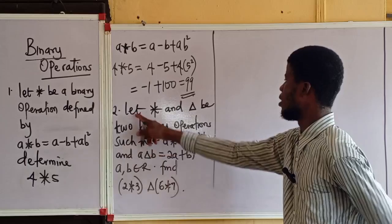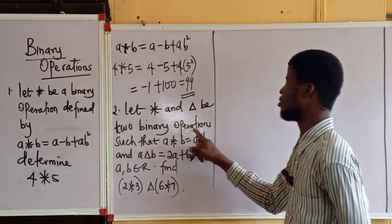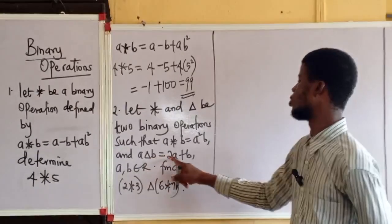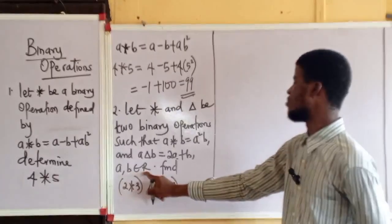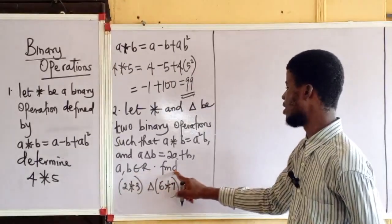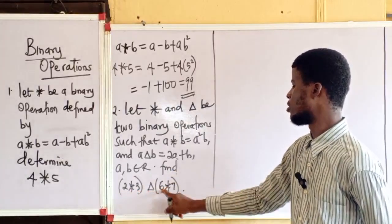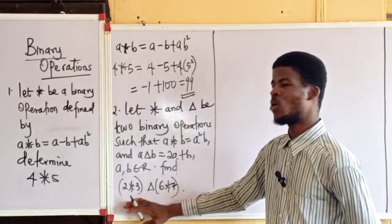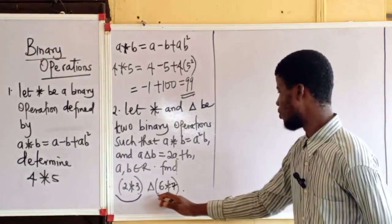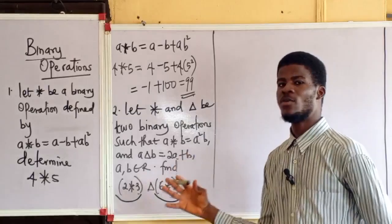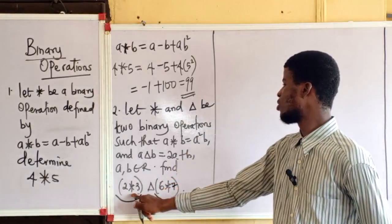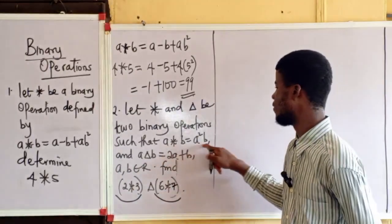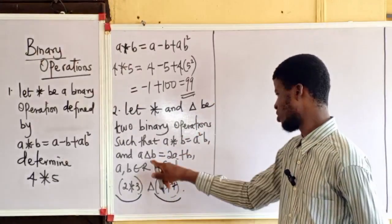The second question: let these be two binary operations such that a operation b equal to a squared b, and a operation b equal to 2a plus b, where a and b are members of the set of real numbers. We have to find 2 operation 3, operation 6 operation 7. We have two binary operations here. To simplify this, we will first break down the inner operations, then combine the two results. To break the first one down we use the first rule, and for the second we use the second rule.